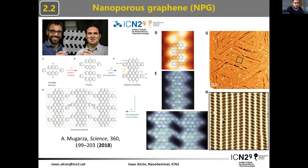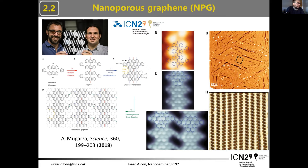This material generated a lot of attention in the scientific community. One of the theoretical studies was conducted by Matz Brambiuk at the Technical University of Denmark, who simulated the injection of electrons by an STM. What he found was that injecting current near the STM confines it on a single graphene nanoribbon, but far from the source, in a larger-scale piece of nanoporous graphene, the currents actually spread through the entire material.